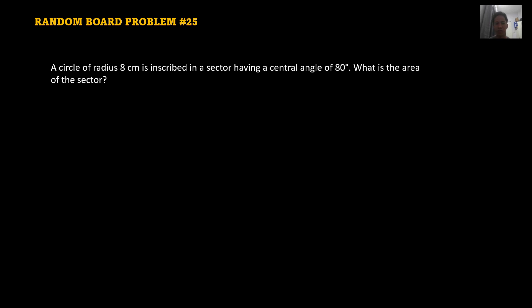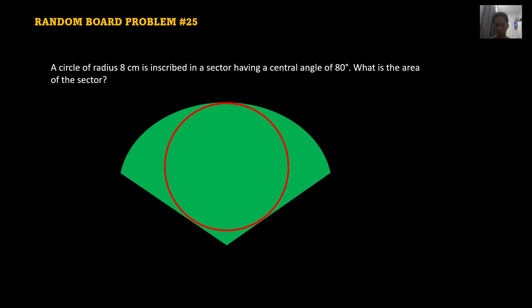So we have a bunch of concepts here for circle and we have a sector. So we have the circle. The circle is inscribed. Inscribed by the word 'in' means it's inside. It's inside the sector wherein the sector is in a pizza shape figure. So the sector comes from a circle wherein we have a central angle.